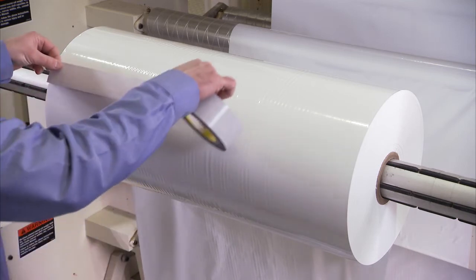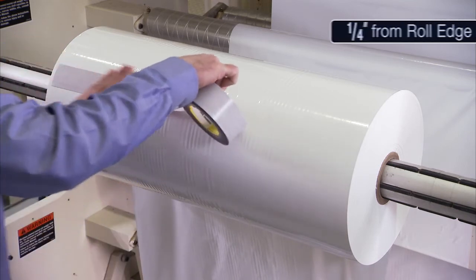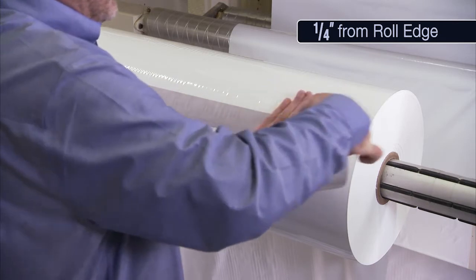Next, apply tape across the roll, starting and ending a quarter of an inch from the right and left edges.